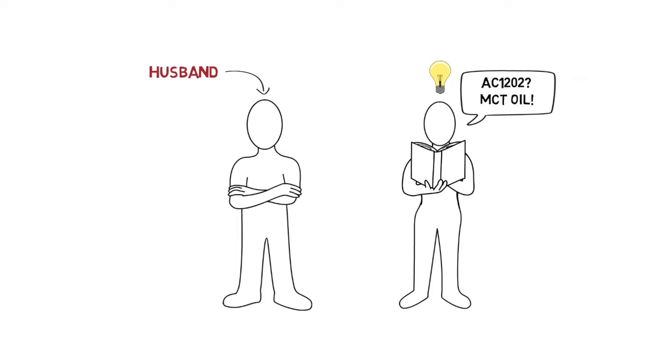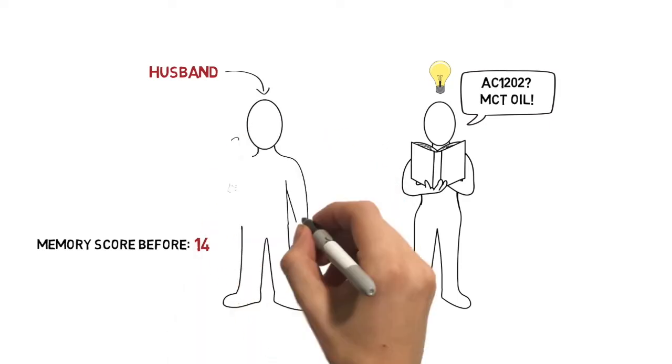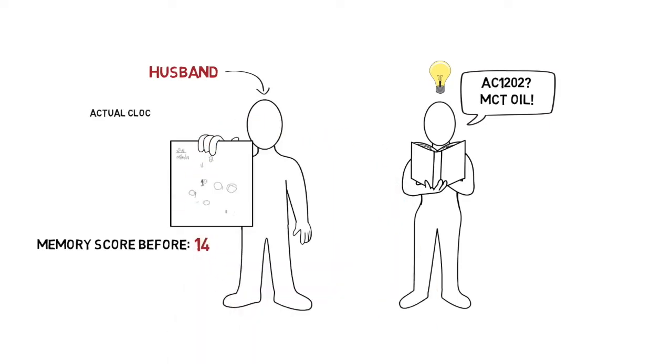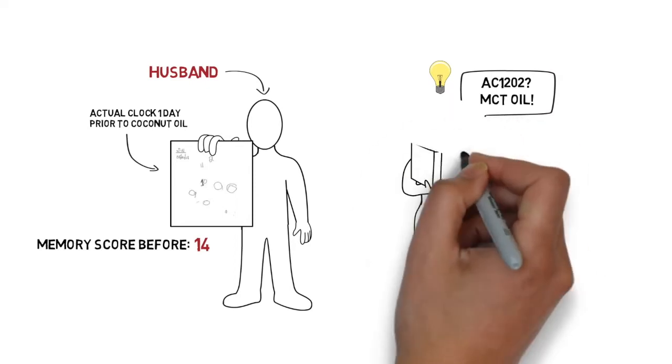Mary's husband was scheduled for a screening for a new Alzheimer's clinical trial the next morning and was not accepted due to scoring a 14 out of 30 on a memory test, which indicated his Alzheimer's had progressed too far to be a test subject. Part of his assessment was drawing a clock, which showed that he was now on the verge of severe Alzheimer's.